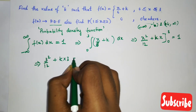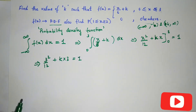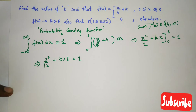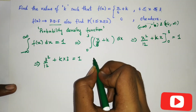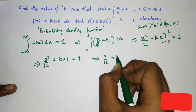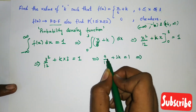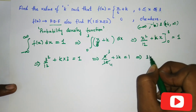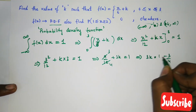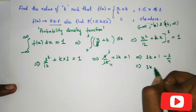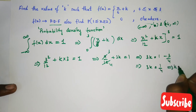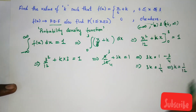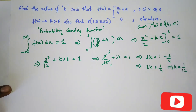3² is 9, so we get 9/12 + 3k = 1, which simplifies to 3/4 + 3k = 1. Shifting 3/4 to the right: 3k = 1 − 3/4 = 1/4. Therefore k = 1/12. We have found the value of k.